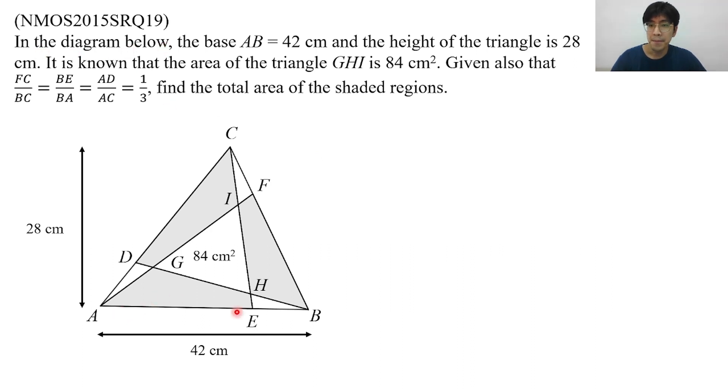In the diagram below, the base of this triangle ABC is 42 centimeters and the height is 28 centimeters. It is known that the area of triangle GHI is 84 centimeters squared, and given also that we have some ratio between the three sides, find the area of the shaded regions.